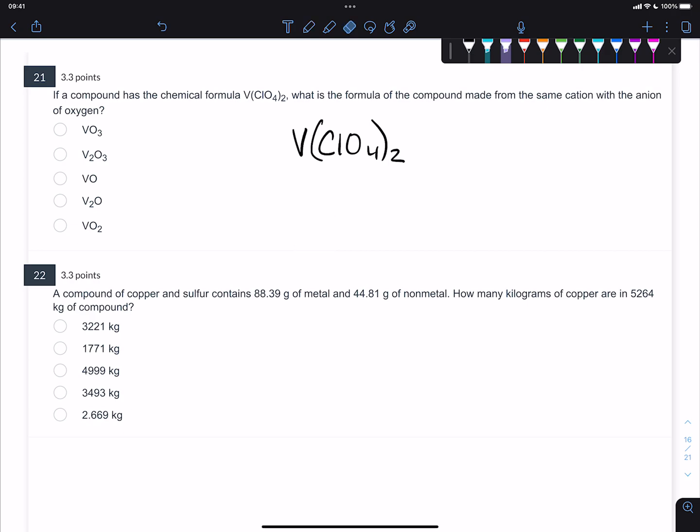All right, so you have V(ClO4)2, let's split it apart because we have a cation—this is a vanadium cation—and then we have a polyatomic anion which is ClO4. You do need to know your polyatomic oxyanions, and this looks a lot like chlorate. Chlorate, let's see what chlorate would be: ClO3 minus, that's chlorate. Just keep in mind that when you add an oxygen to the base form,